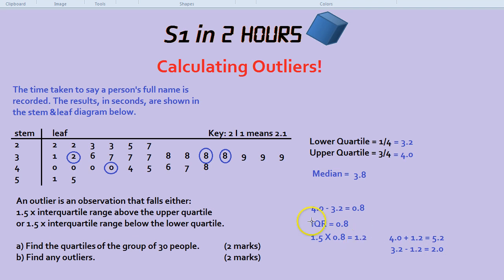And are there any numbers above 5.2? Yes, this person took 5.5 seconds. So he would be an outlier. The person who took 5.1 is not, they're just about within.